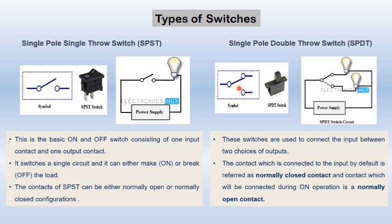Next, we have the single pole double throw switch. We have a single common pole and the switch can be thrown to two positions — that's why it is called a single pole double throw switch. Here is the picture of the switch; it can be moved to two positions. In this diagram you can see we have two bulbs and the switch can be thrown to any position to make that particular bulb glow. The contact which is connected to the input by default is referred to as the normally closed contact. By default, if the contact is connected to a particular position, that position is called normally closed; the other one is called normally open.